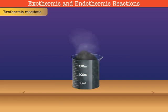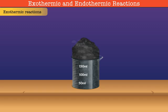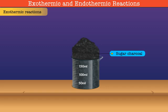Sugar starts changing color and finally turns black and rises in a column, releasing steam and a pungent-smelling gas. The black mass left behind is sugar charcoal, a form of pure carbon. This dehydration process is a highly exothermic reaction, turning the water content to steam.